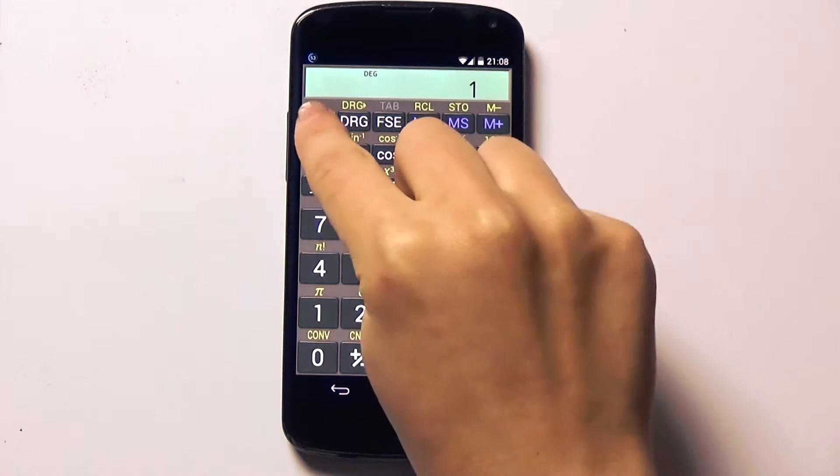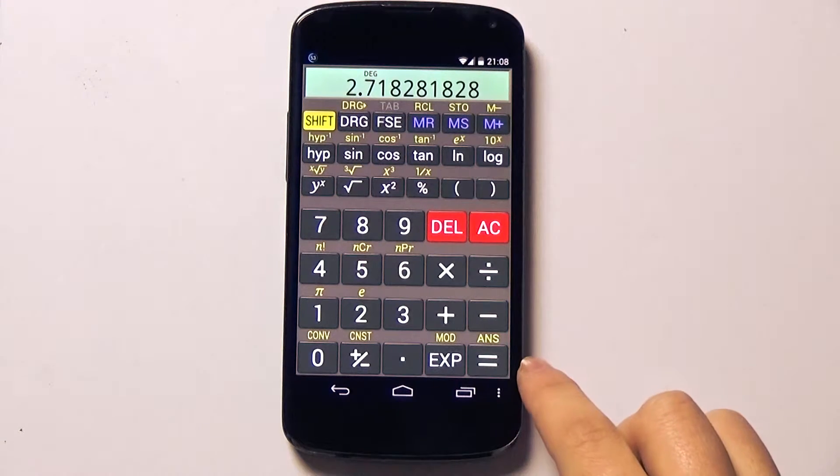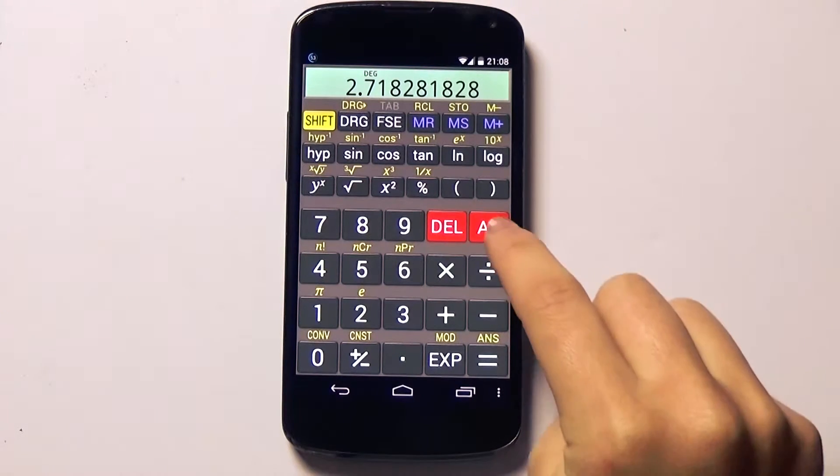If you don't know what e is, e is a very important number in mathematics. Here it is on the calculator. It shows us that it's approximately 2.718.